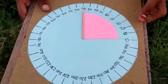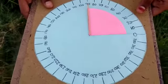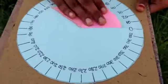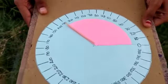Next one, obtuse angle. Obtuse angle means less than 180 degrees and more than 90 degrees. This is obtuse angle.